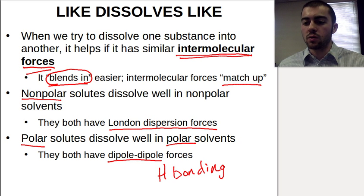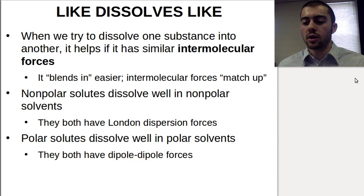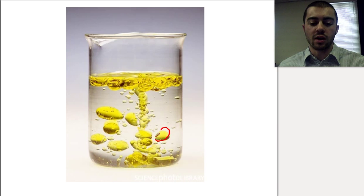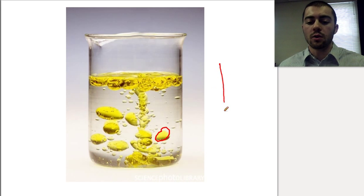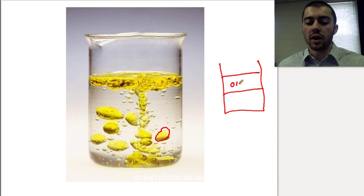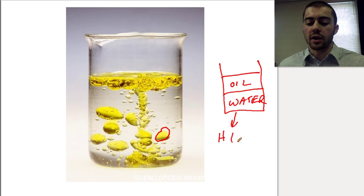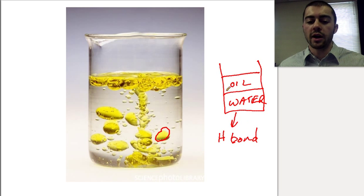This is why, if you've ever tried to mix oil and water, you'd end up with these bubbles that are really hesitant to mix in with the water. If you allowed this to settle, you'd end up with layers — an oil layer and a water layer. Because these two substances don't have similar intermolecular forces. Water has hydrogen bonding, so water is very polar with very strong intermolecular forces because of that hydrogen bonding.